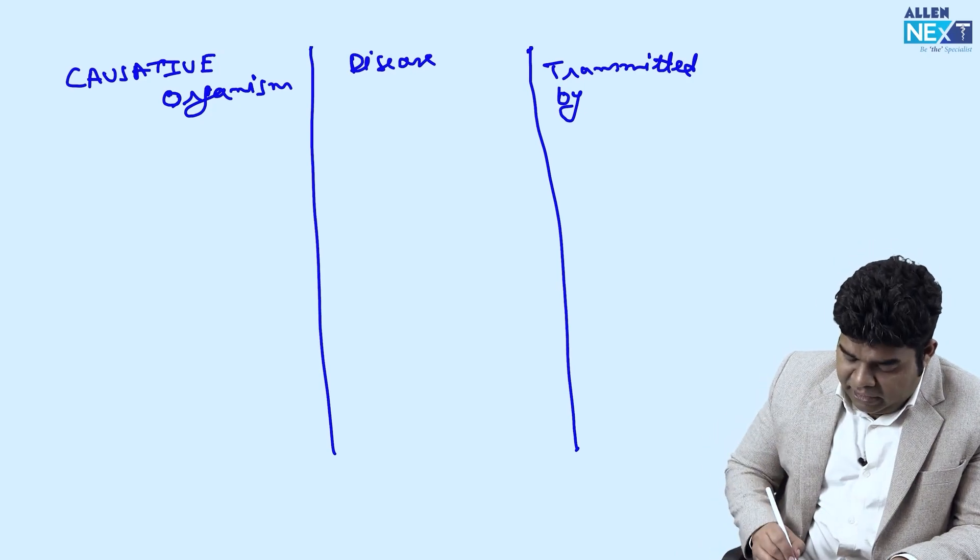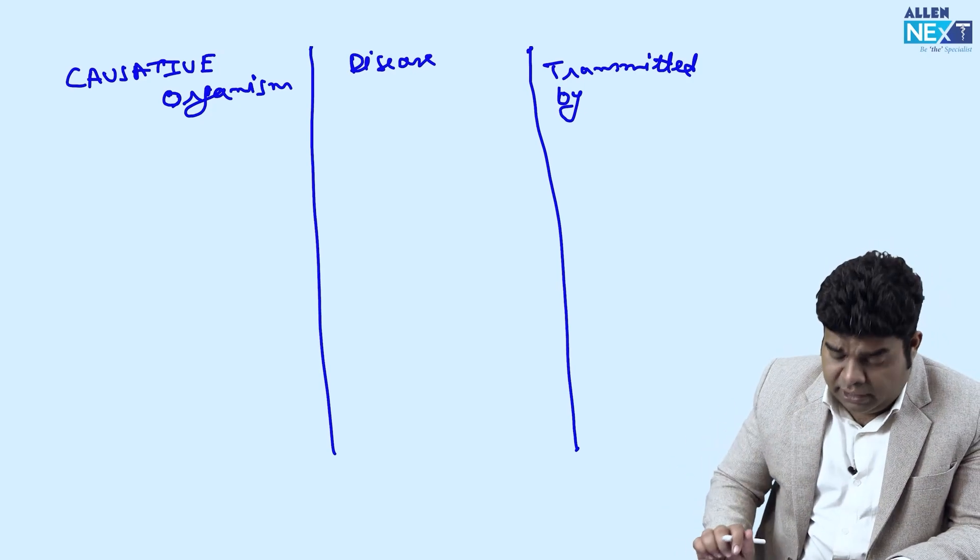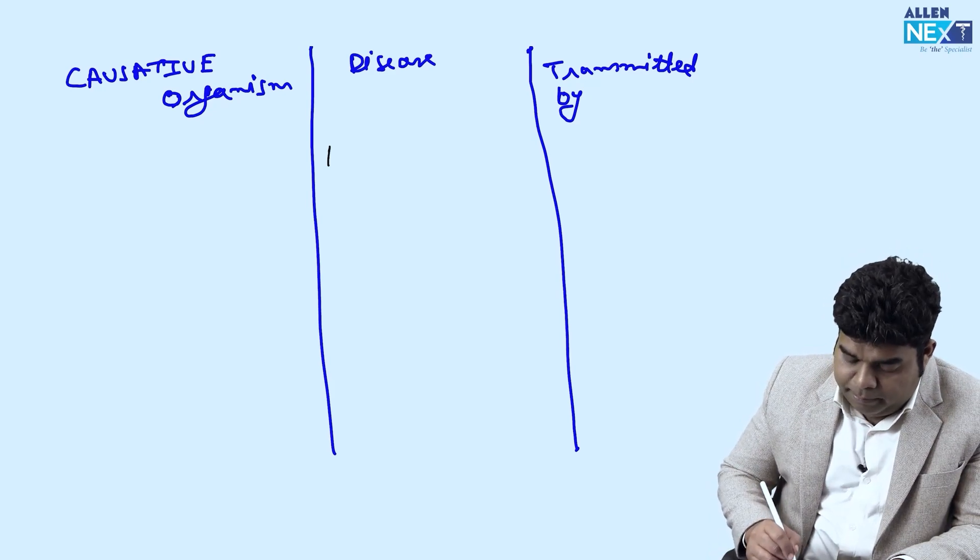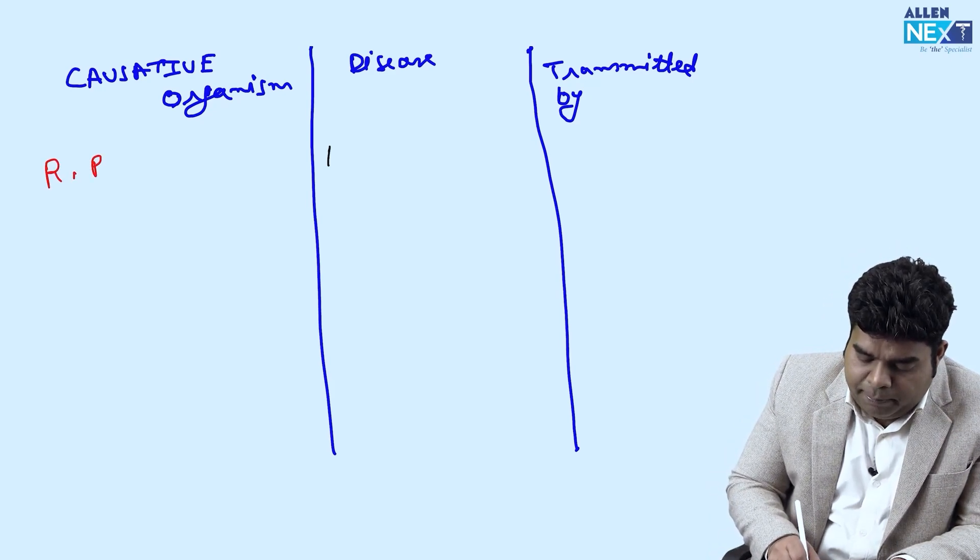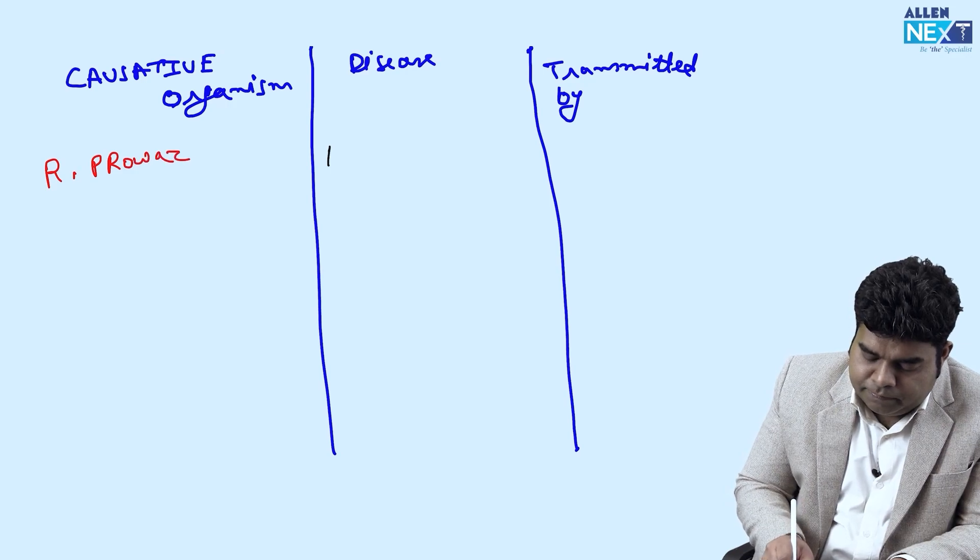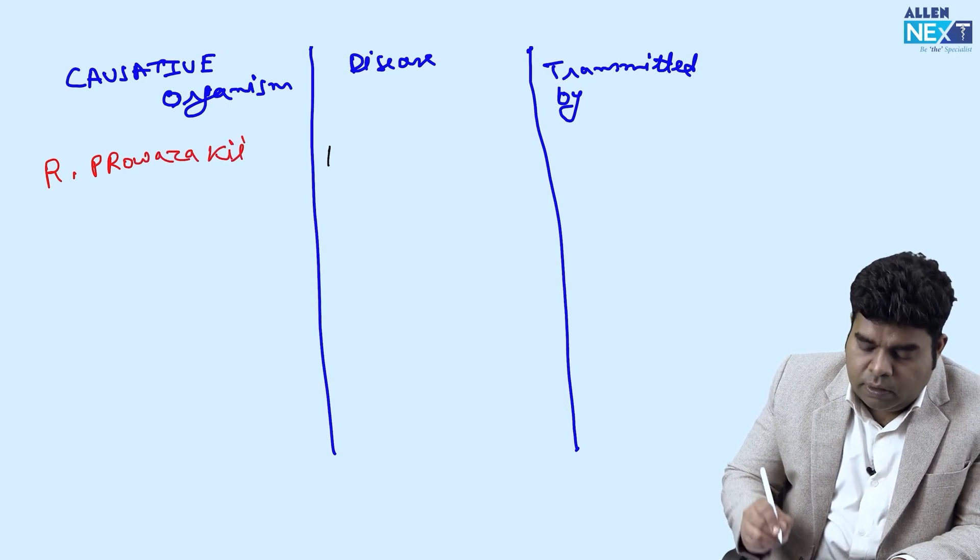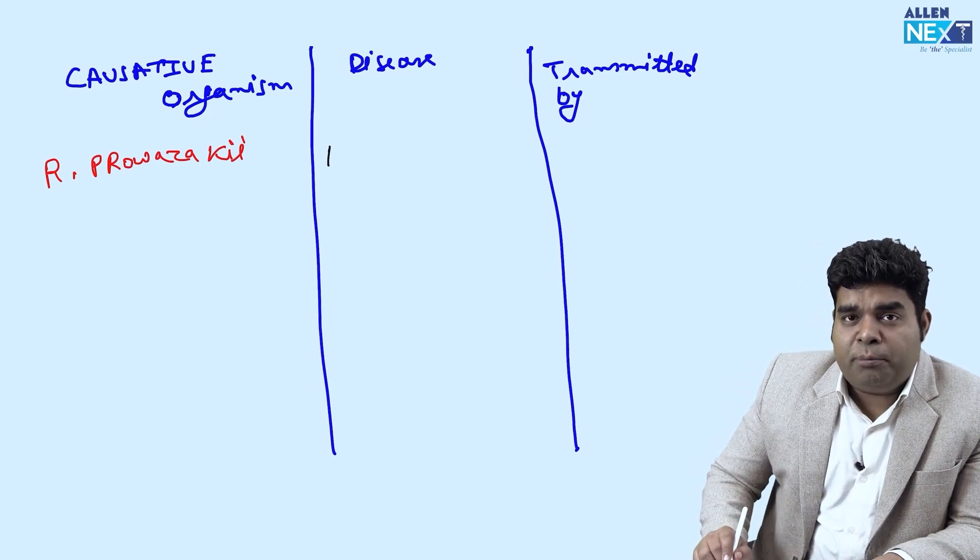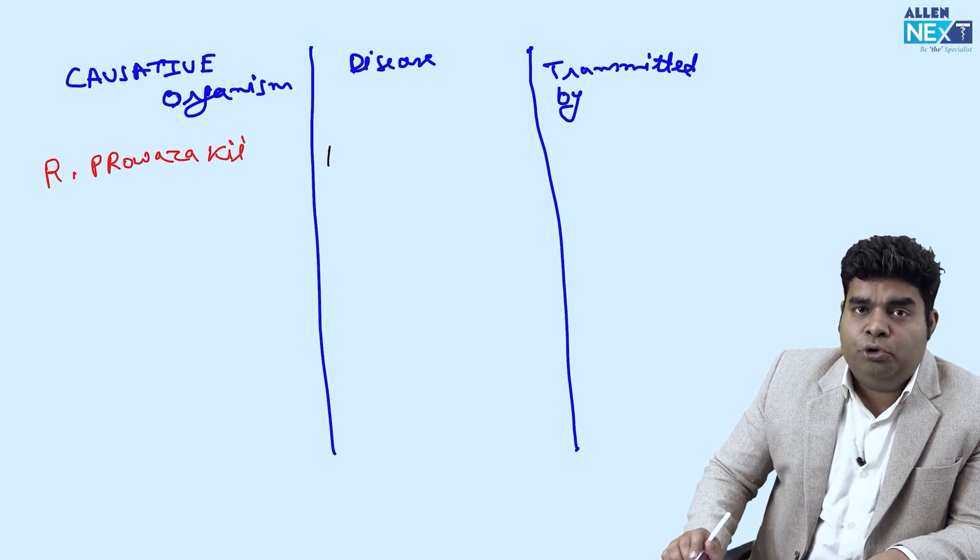For example, a very common question which came just last year is that they have given the name of the parasite Rickettsia provazeki and they said that Rickettsia provazeki is transmitting some disease, who will transmit it?